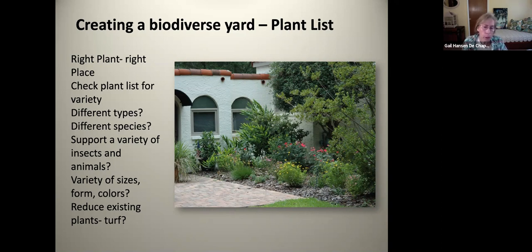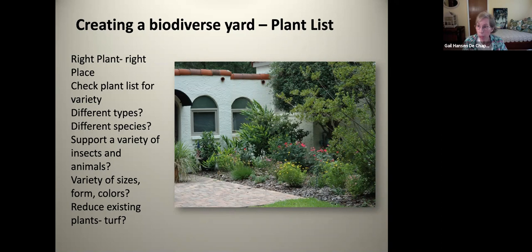Also decide if you're going to reduce or remove any of your existing plants. A lot of people ask about turf — where does that fall in the biodiversity plant list? You would be surprised to learn that turf actually does support a lot of insects, and those insects also support a lot of birds. Beetles, for example, live in turf and you will often see birds pecking at them. So there's a place for turf — all the different animals that grow in the root mass of turf too. It does have a place in a biodiverse landscape, but obviously you don't want a yard that's 90% turf because then you're leaning much more toward monoculture.